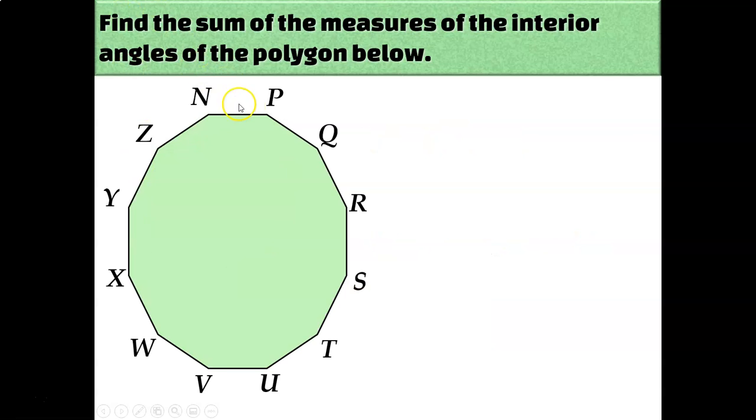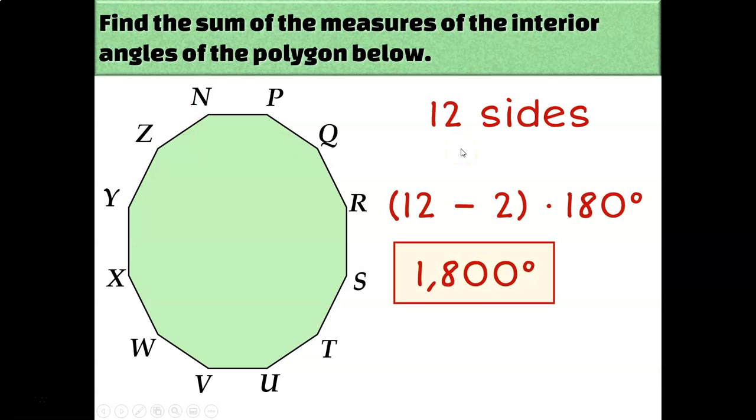What about this big boy? One, two, three, four, five, six, seven, eight, nine, 10, 11, 12 sides. So I'll do 12 minus two, that's 10, multiply it times 180. And this 12-agon, if you don't know the name of something, you can just say 12 and then agon, and it's a great name for a polygon. So this 12-agon has 1800 degrees of interior angle measures.